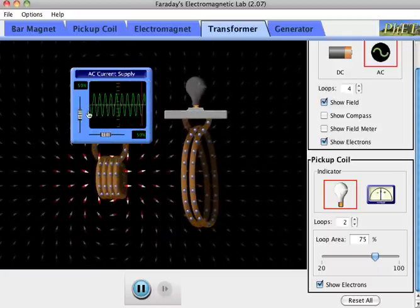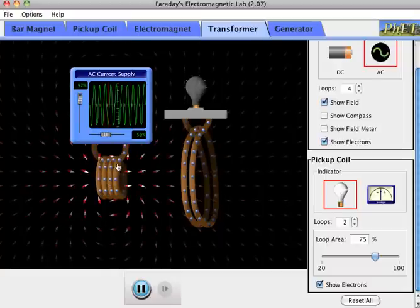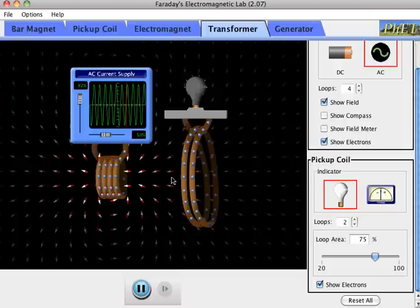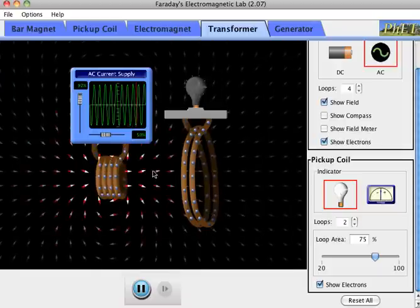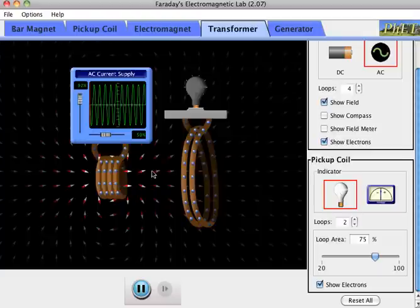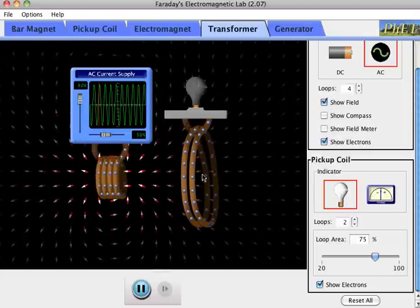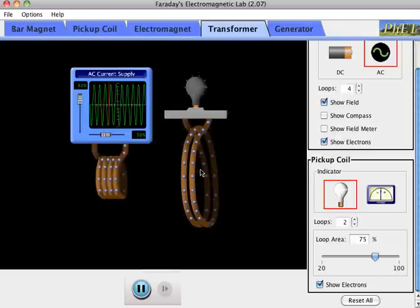Now, I can also increase the voltage across this coil. I get a bigger magnetic field due to this coil, and so I get a bigger switching, a bigger change in magnetic field through this coil, and I get a bigger effect.